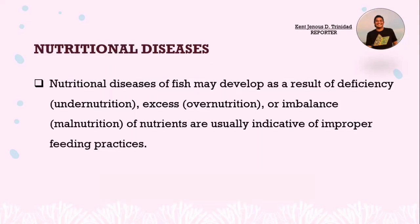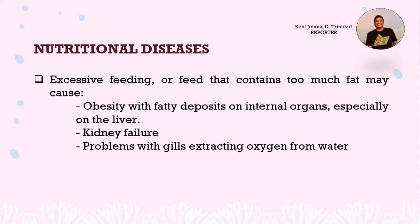Next is nutritional diseases. Nutritional diseases of fish may develop as a result of deficiency or undernutrition, excess or overnutrition, or imbalance or malnutrition of nutrients, and are usually indicative of improper feeding practices. Excessive feeding or feed that contains too much fat may cause obesity with fatty deposits in internal organs, especially the liver, kidney failure, and problems with gills extracting oxygen from water.